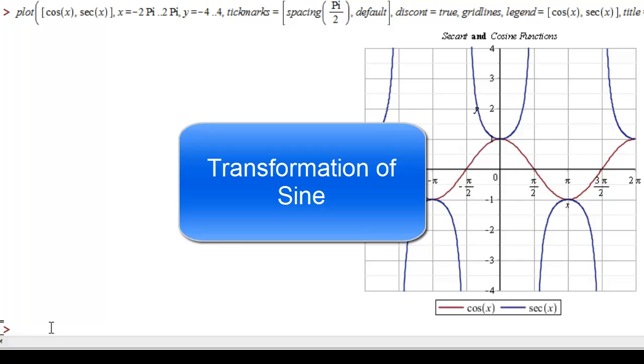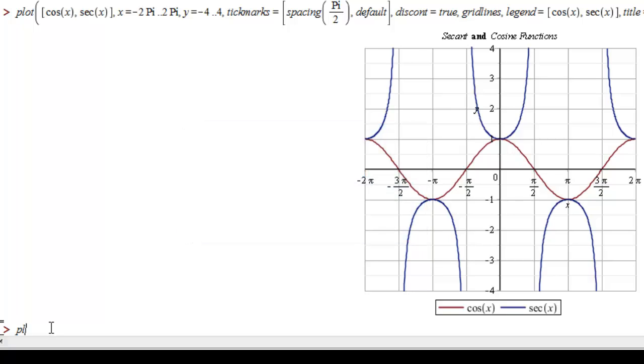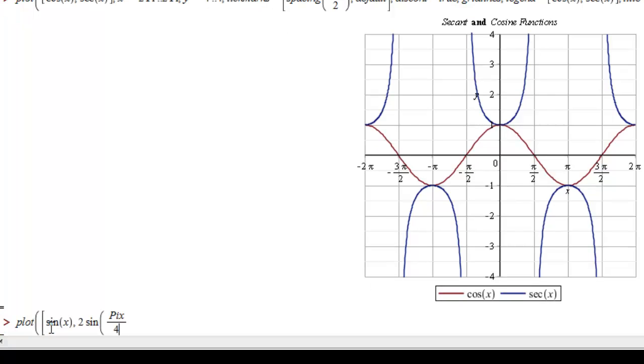Let's take a look at a transformation of the sine function and the sort of things that you can expect when you transform a sine function using transformations we've seen before. So let's look at just the regular sine together with 2 times the sine of π times x over 4. Notice that when we're typing π times x over 4, we do have to explicitly write the multiplication using the asterisk sign, otherwise it'll think we're just saying picks over 4. So this is sine of πx over 4.